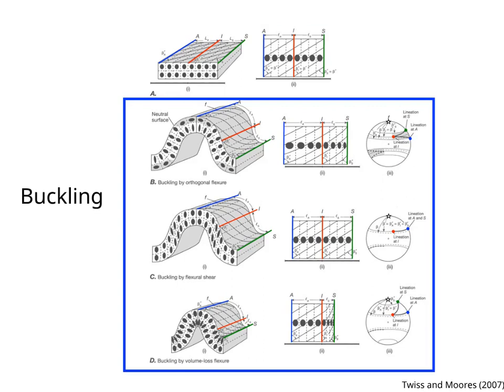This means that zones that during folding experience shortening perpendicular to the fold hinge will look more shortened at the end. And zones that experience extension perpendicular to the fold hinge will look less extended at the end.